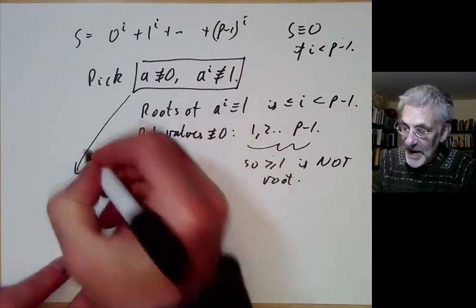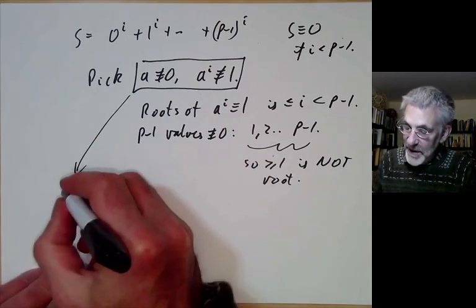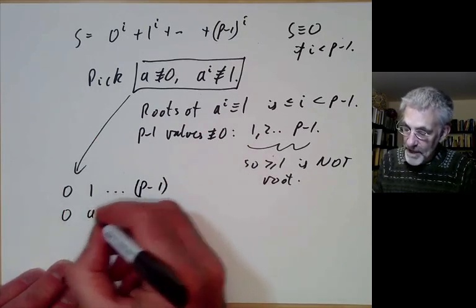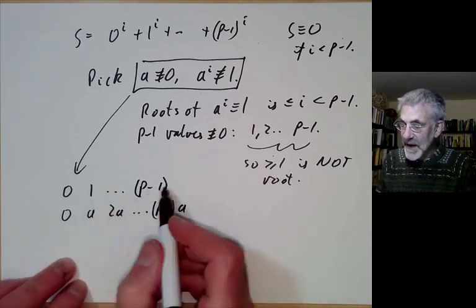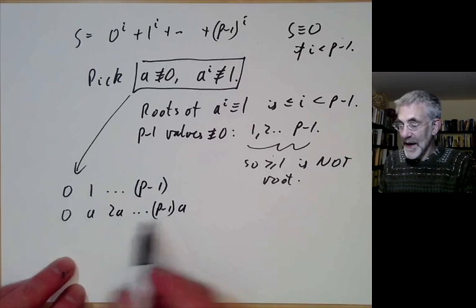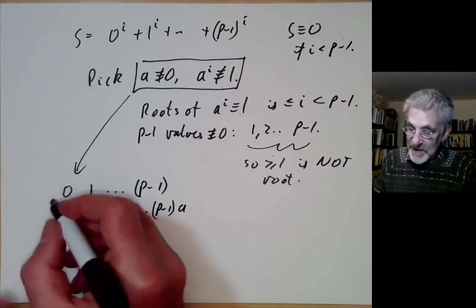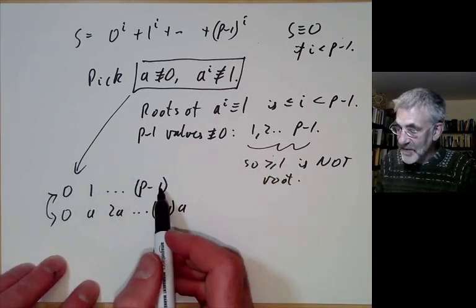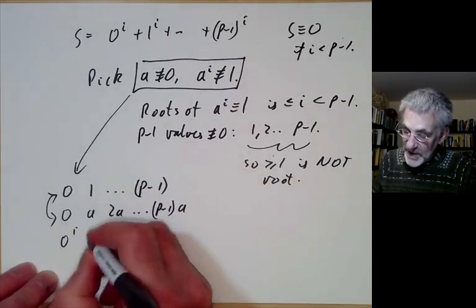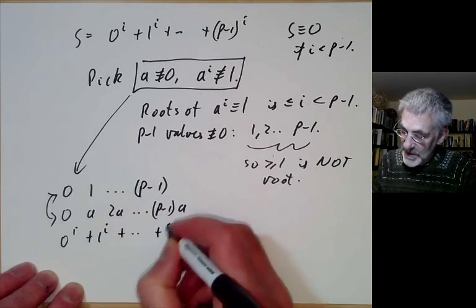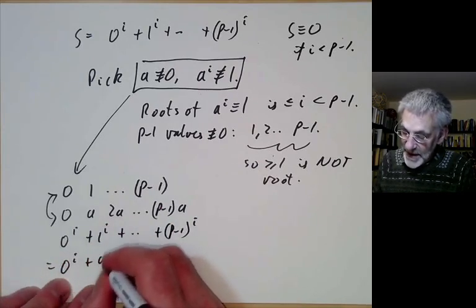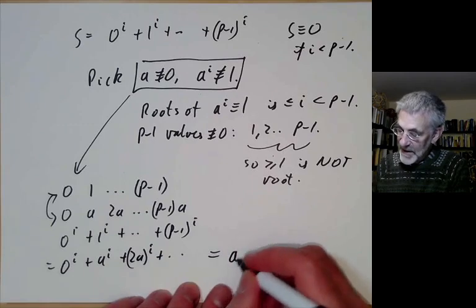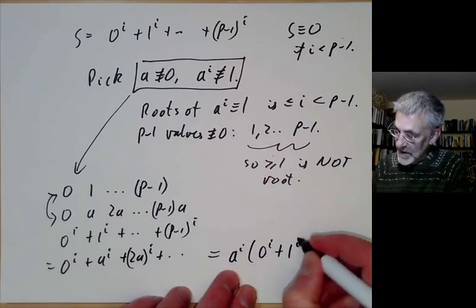Now that we've found this magical number a, what can we do with it? We can take the numbers 0, 1 up to p-1. And if we multiply them all by a, these are the same except we've permuted them because a has an inverse. So these sets are the same. So the sums of the ith powers are the same. So we find 0^i + 1^i + ... + (p-1)^i is equal to 0^i + a^i + (2a)^i and so on. Except this sum here is equal to a^i times (0^i + 1^i + ...). So if we call this sum s, we find s = a^i times s.